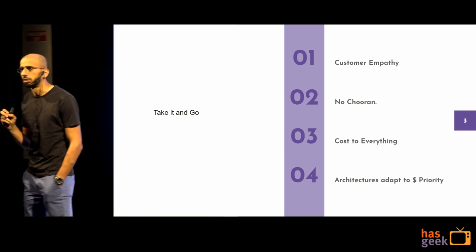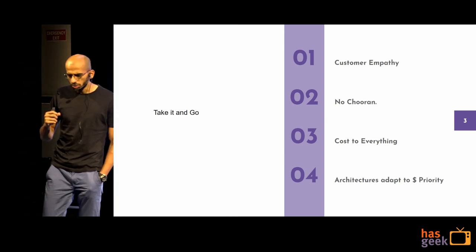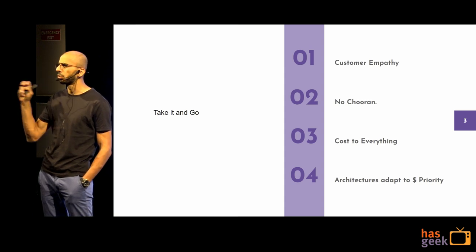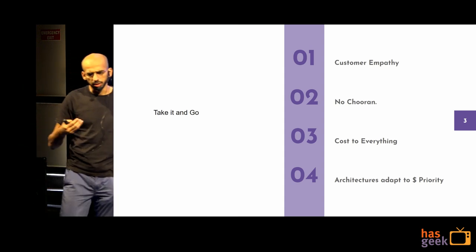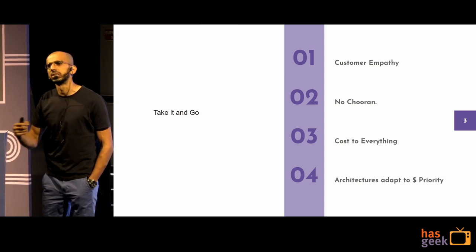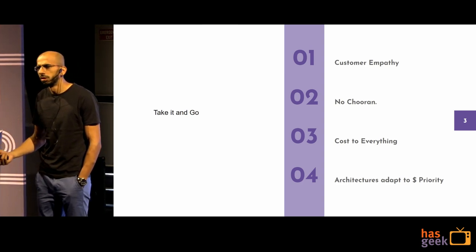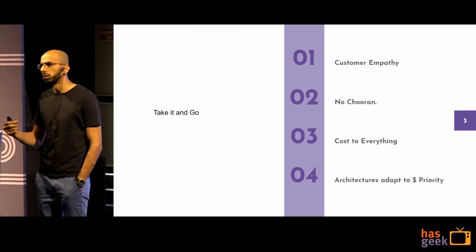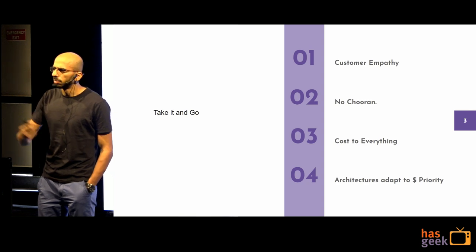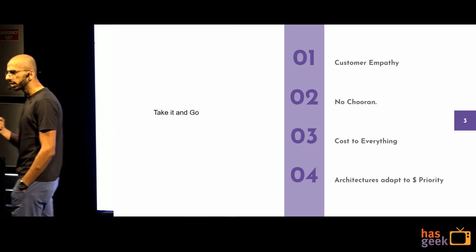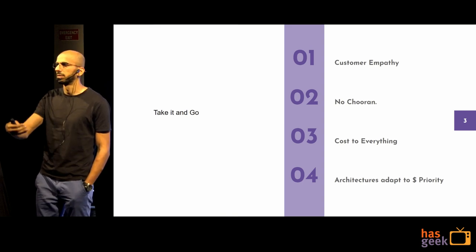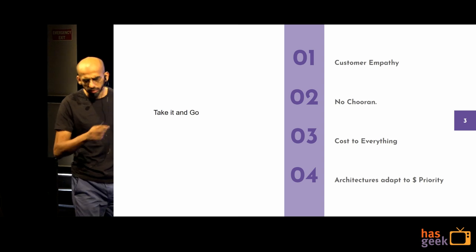Four things I want to focus on: first, customer empathy. Everything we do has to do with our customers. Second, there's no single answer — I can give you options, but there are always trade-offs. Third, architectures always adapt to business priorities. A dollar value has to come in — everything in engineering has to align with business.